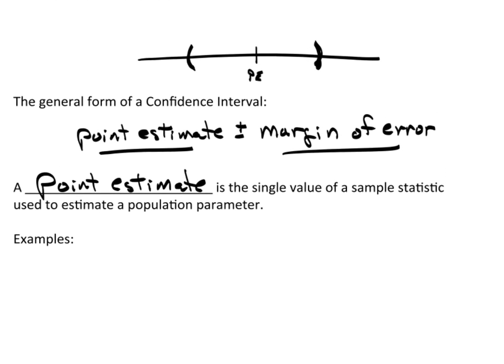You already know a bunch of point estimates. As an example, X bar. That's the sample mean. It's used to estimate mu. X bar is a point estimate. S. That's the sample standard deviation. That's used to estimate sigma. S is a point estimate. M, the sample median. That's a point estimate. It's a single value. It's used to estimate theta, the population median.